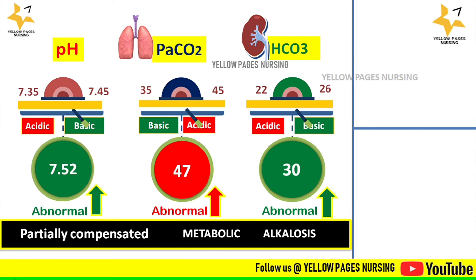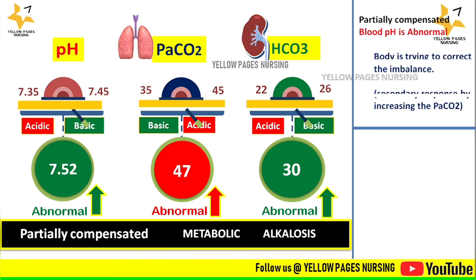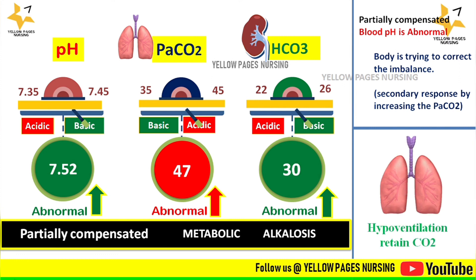In partially compensated metabolic alkalosis, the blood pH is abnormal and the body is trying to correct the imbalance through a secondary response by increasing PaCO2. The mechanism is hypoventilation, where carbon dioxide is retained, causing the PaCO2 to be above the normal range.